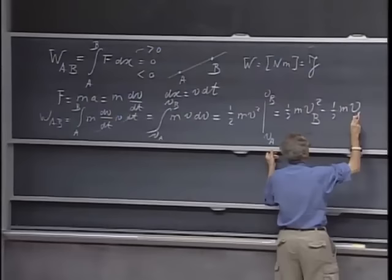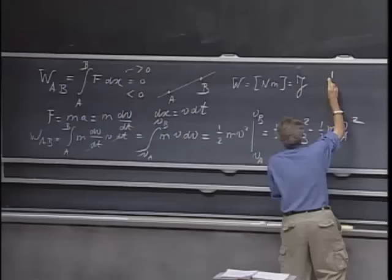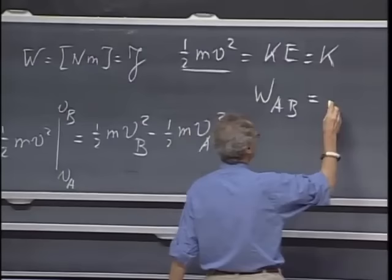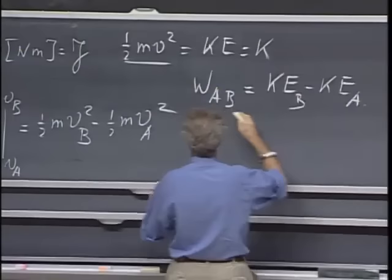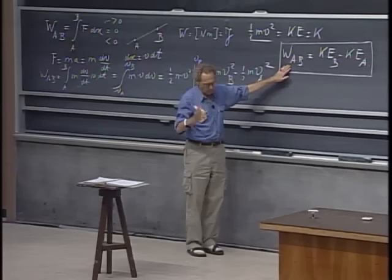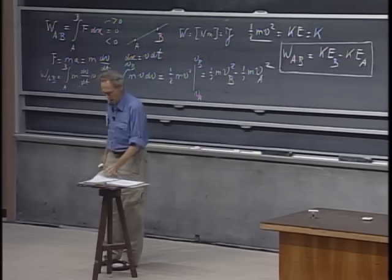One-half mv² is what we call in physics kinetic energy. Sometimes we write just K for that. It's the energy of motion. And so the work that is done when a force moves from A to B is the kinetic energy at point B minus the kinetic energy at point A. This is called the work-energy theorem. If the work is positive, then the kinetic energy increases when you go from A to B. If the work is smaller than zero, the kinetic energy decreases. If the work is zero, there is no change in kinetic energy.